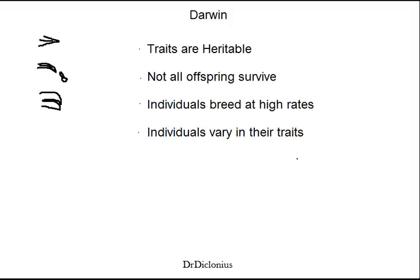Another very important thing to understand about natural selection is that the individual himself or herself does not actually evolve. It's actually the population that evolves. So when we're talking about natural selection, we're talking about individuals not evolving, but the actual population evolving.